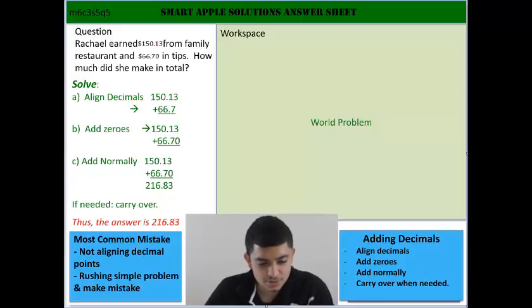So in our word problem today, it says Rachel earned $150.13 from her family restaurant and earned $66.70 in tips. How much did she make in total?